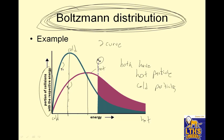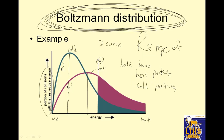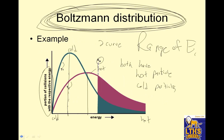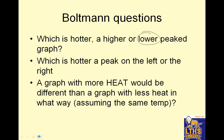This is increasing energy — over here is hot, over here is cold. Notice there is a range of energies; they're not all the same. Which is hotter — a higher-peaked or a lower-peaked graph? It's the lower peak. It's hotter because more particles have higher energy. The hotter peak is the peak on the right.